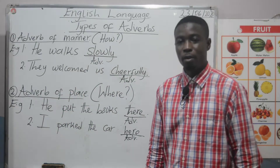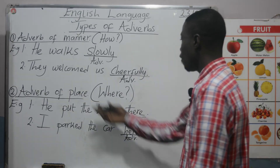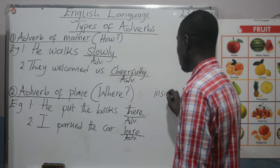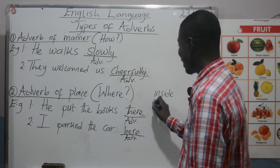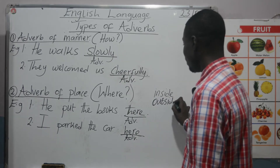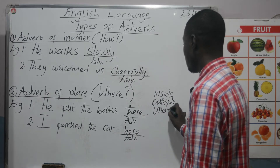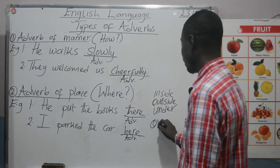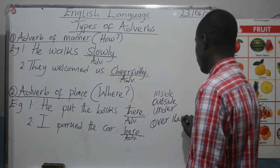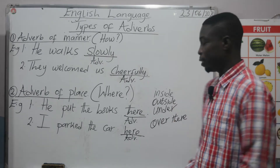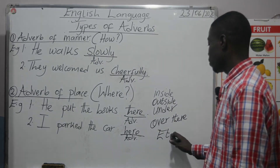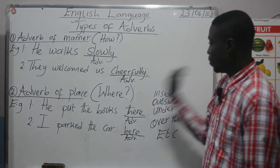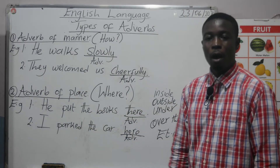In giving more examples of adverb of place, we can talk about: inside, outside, under, there, here, over there, and so on and so forth.